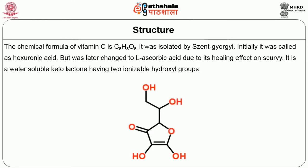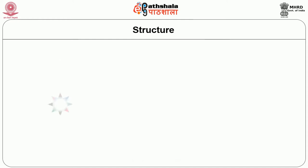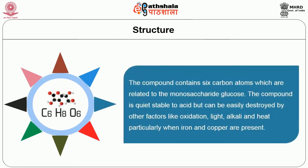Moving on to its structure, the chemical formula of vitamin C is C6H8O6. It was isolated by Szent-Györgyi. Initially it was called hexauronic acid but was later changed to L-ascorbic acid due to its healing effect on scurvy. It is a water-soluble ketolactone having two ionizable hydroxyl groups.